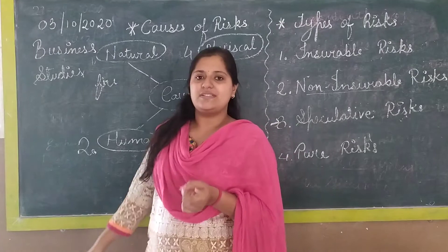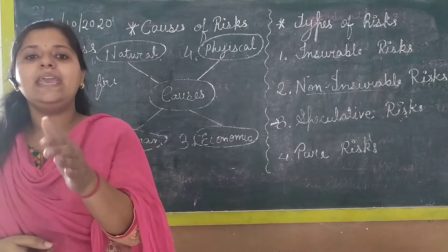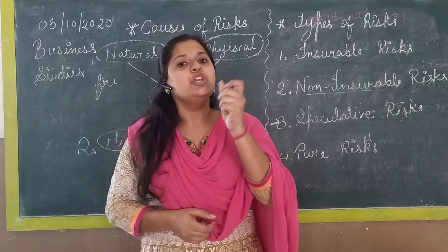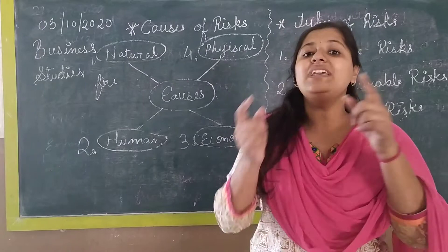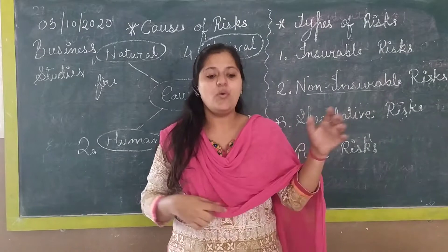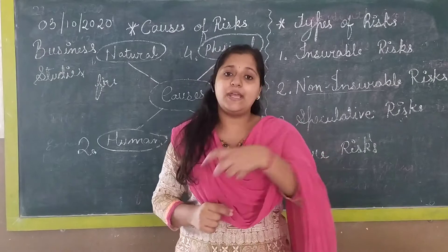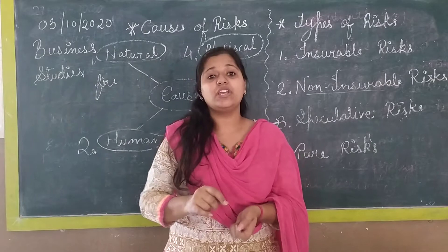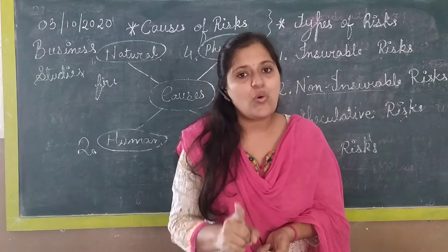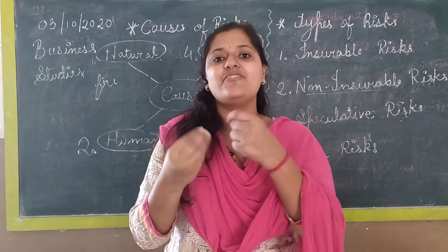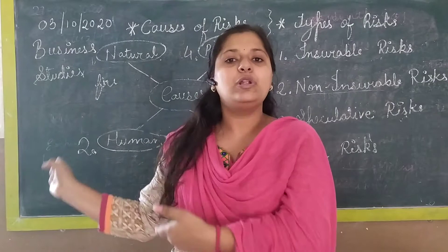The second cause is human causes, which are related to the employees of the organization. For example, in a company XYZ, if employees who work there know the company's secrets and reveal those secrets to another company, that can cause a business loss. Any risk arising from employees is included under human causes.